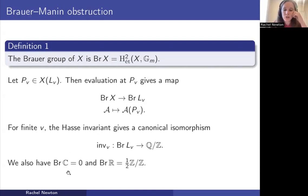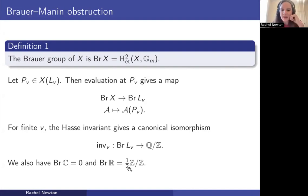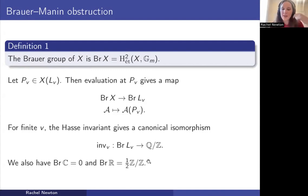If V is a finite prime, then the Hasse invariant gives a canonical isomorphism from the Brauer group of L_V to the rationals modulo the integers. For the infinite places: the Brauer group of any algebraically closed field like the complex numbers is trivial. The Brauer group of the reals is cyclic of order two — the non-trivial class is given by the quaternions. I write the cyclic group of order two as (1/2)Z mod Z, to see it as lying inside the rationals modulo the integers.